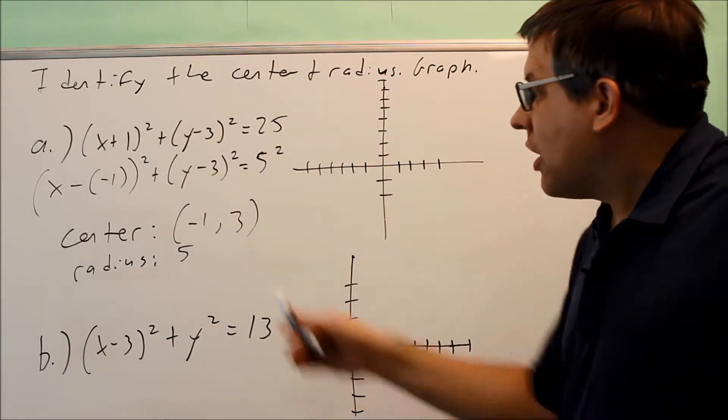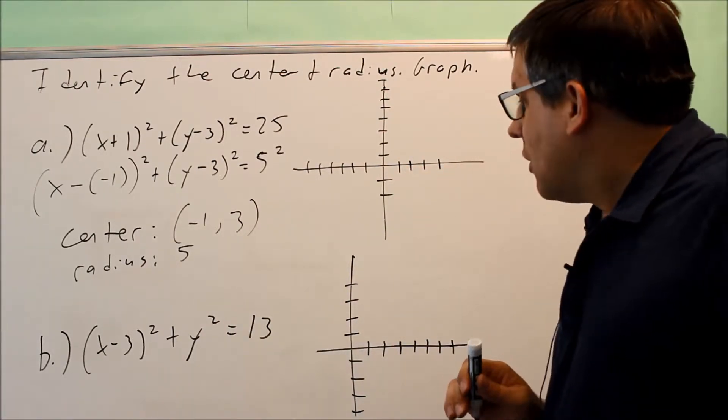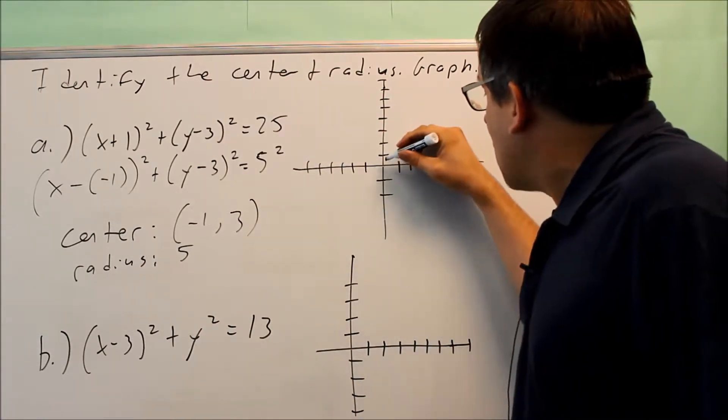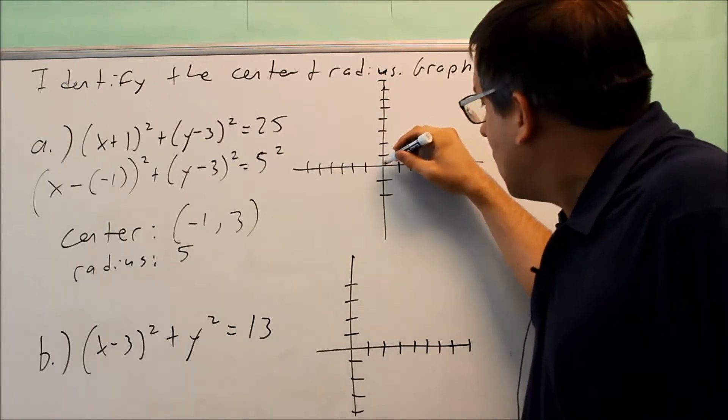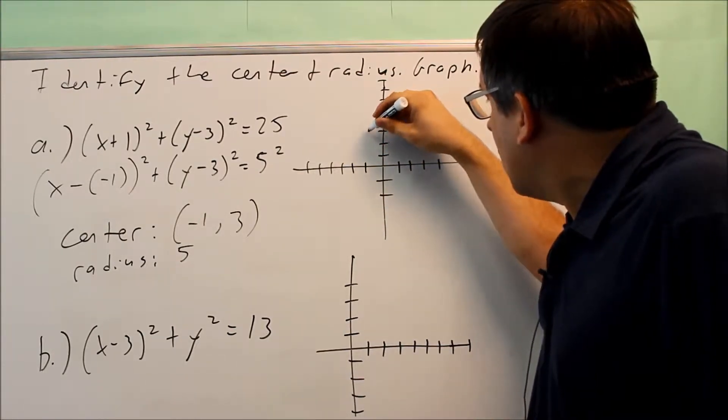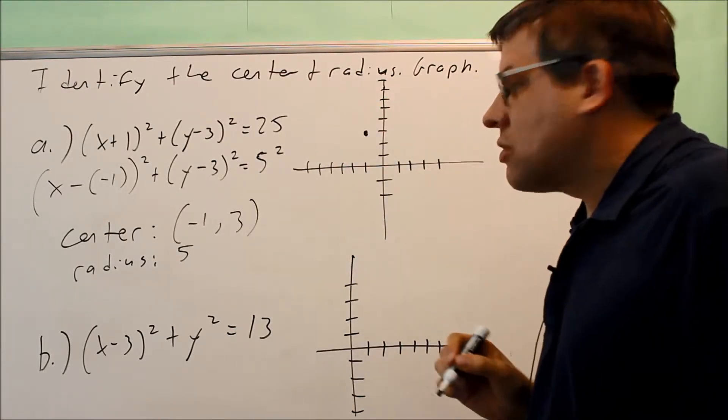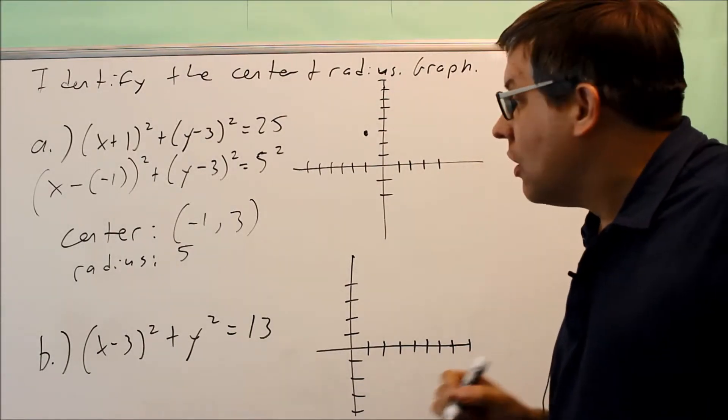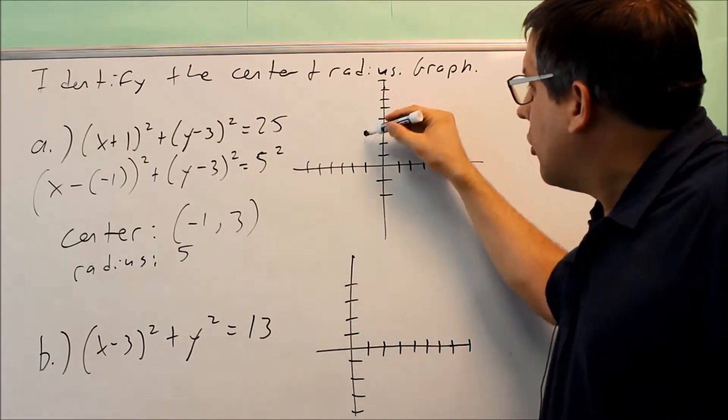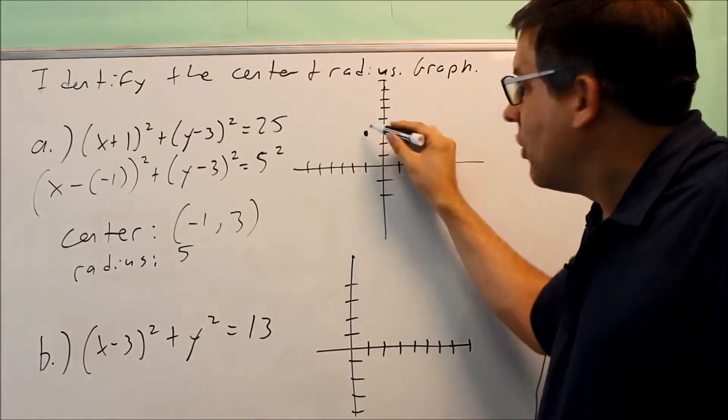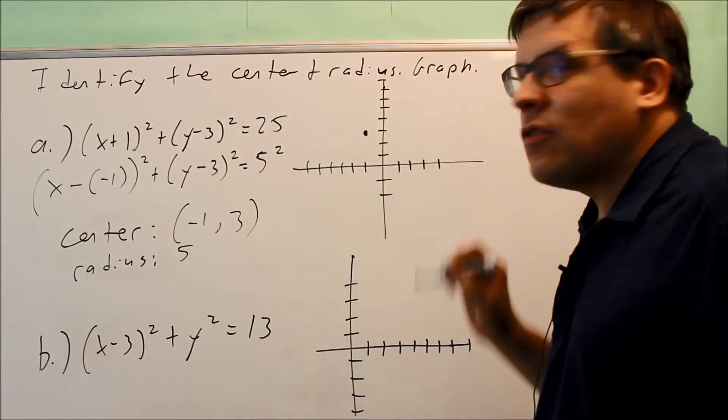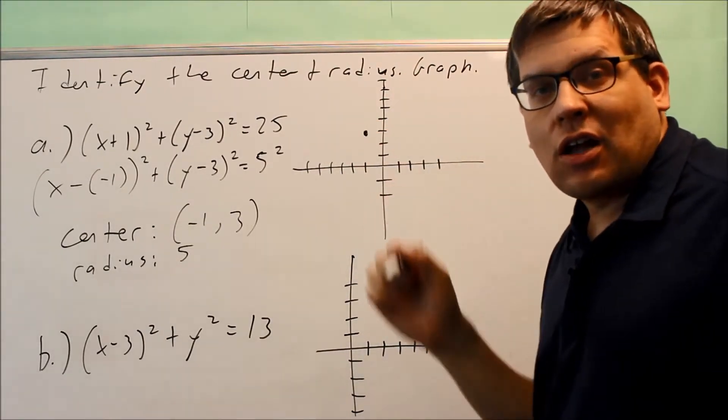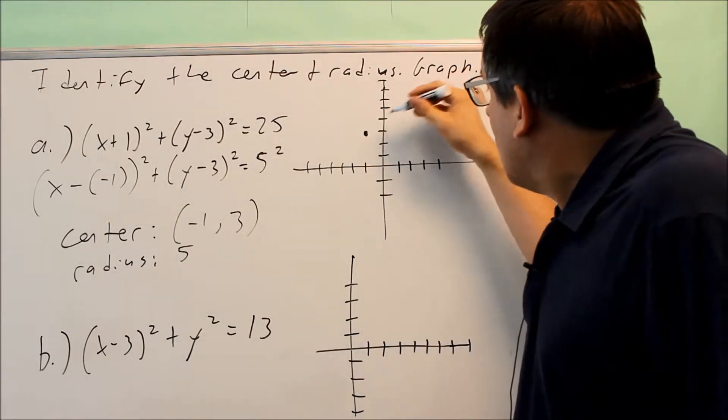Now that we have this information, we're ready to do the graph. The center is negative 1, 3, so I start by plotting the center negative 1 and I go up 3, so right there is my center negative 1, 3. The radius is going to be 5, so I want to go up 5, down 5, left 5, and right 5 to create those four points that I can connect and get my graph.